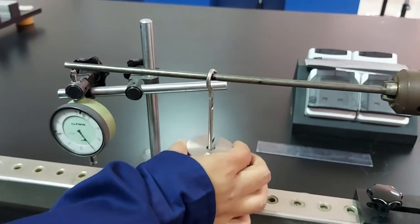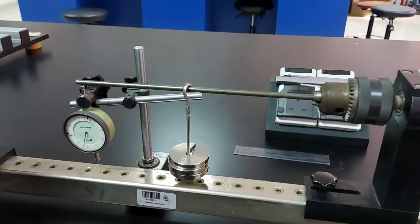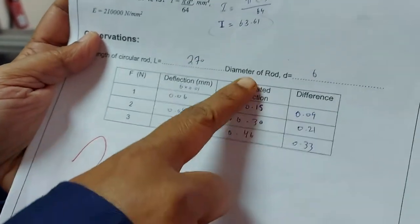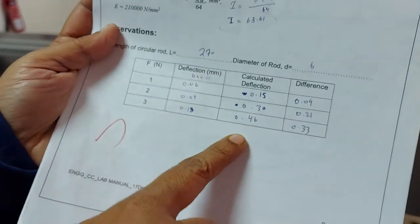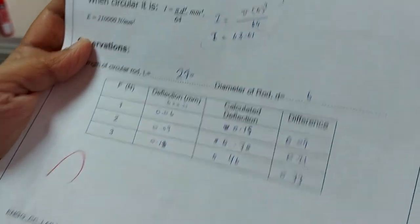And for load number 3, again you have to check the deflection, according to that you need to do it. So we have got the 3 deflection values from practical and we have got the deflection value from theoretical and by checking the difference, you need to put the difference value over here.